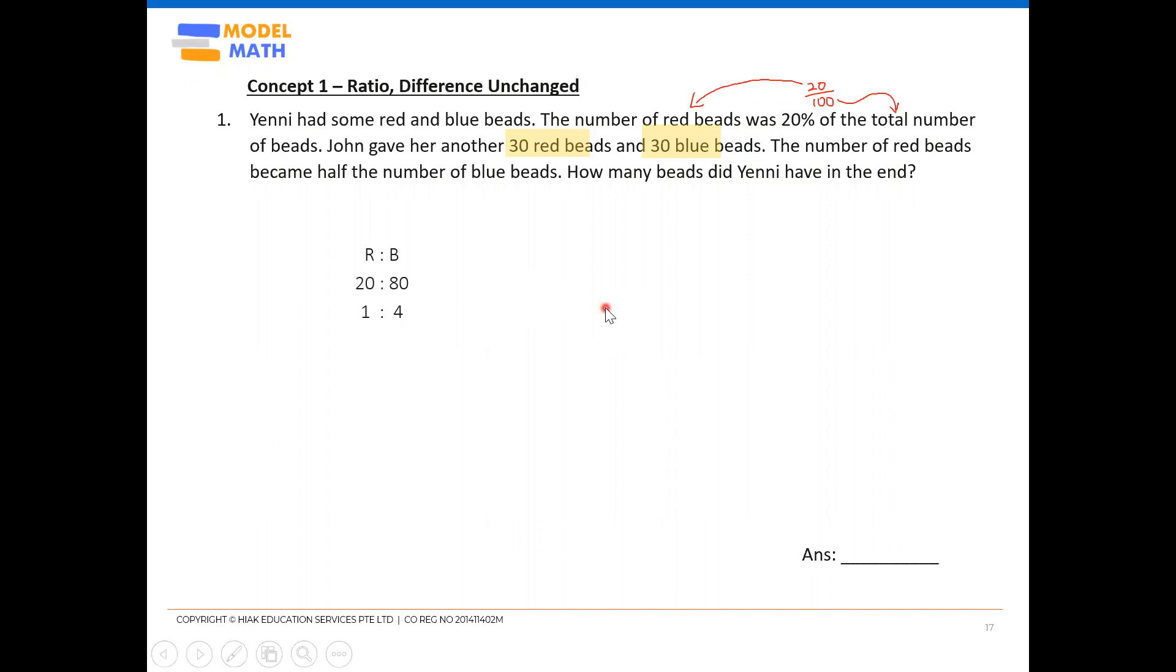Now, then you can go on to show the change. The change is that John gave her another 30 red and 30 blue. So that means her red and blue will each increase by 30. So red plus 30, blue also plus 30. Now in the end, the number of red beads became half of the blue. So again, I can create a red to blue ratio.